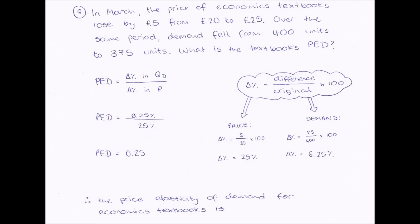Working out percentage change in demand: our original demand was 400 and our final demand after the price change was 375, so our difference was 25 textbooks, divided by the original demand of 400, times 100. That gives us a percentage change in demand of 6.25%. For percentage change in price, that works out to 25%. So PED equals 6.25 divided by 25%, giving us a price elasticity of demand of 0.25.